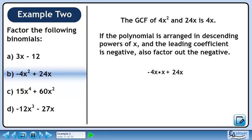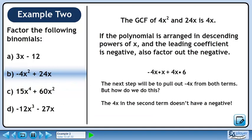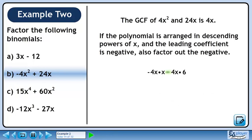Rewrite 4x squared as 4x times x. Rewrite 24x as 4x times 6. The next step will be to pull out minus 4x from both terms. But how do we do this? The 4x in the second term doesn't have a negative. To solve this problem, we'll swap out the plus for a minus and a minus. The second minus can be attached to the 4x in the second term. Now we can pull out minus 4x from both terms. Collect what's left in a set of brackets. The answer is minus 4x times x minus 6.